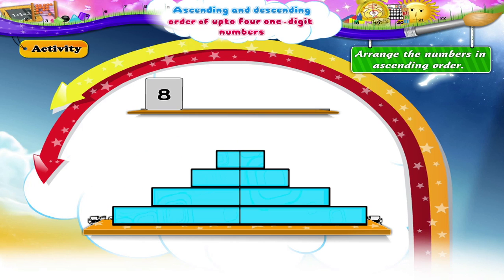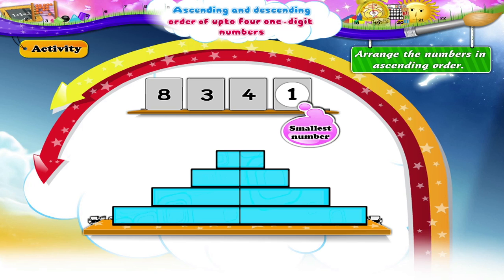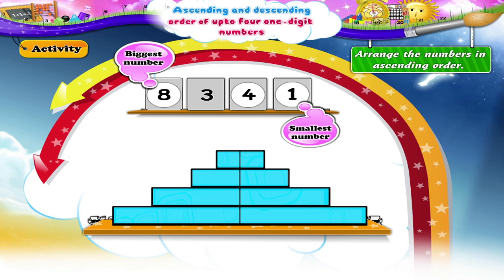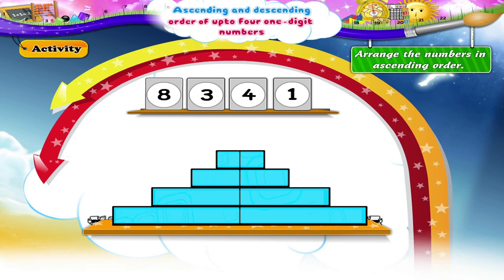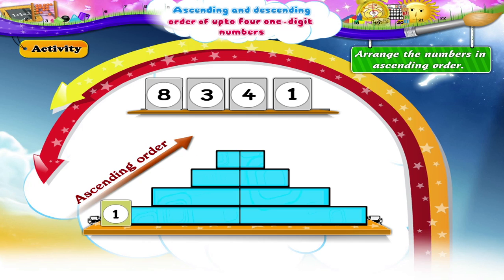Eight, three, four, one. Here, the smallest number is one. And the biggest number is eight. Between four and three, three is the smaller number. The numbers in ascending order are one, three, four, eight.